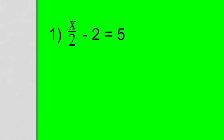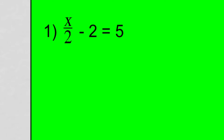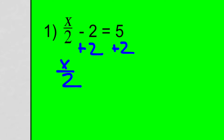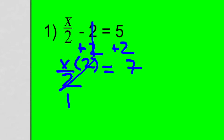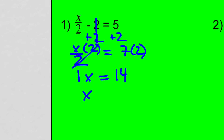We'll start off with one very similar to the one we just solved. Some number X divided by 2 minus 2 equals 5. To solve this, we're going to do the reverse of BEDMAS. We have a minus 2, so we're going to add 2 to both sides. We're left with X divided by 2 equals 7. Now for the divide by 2, we multiply by 2 — because 2 divided by 2 is 1X. Multiply the other side by 2: that gives us 14. So X is 14.